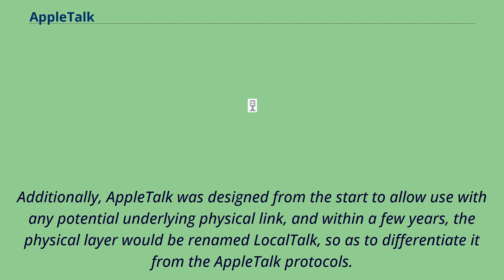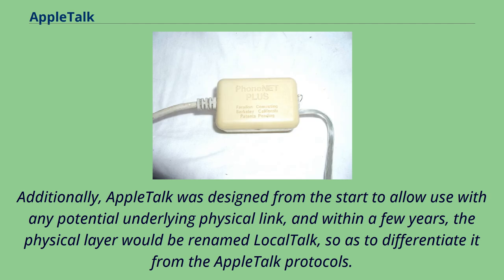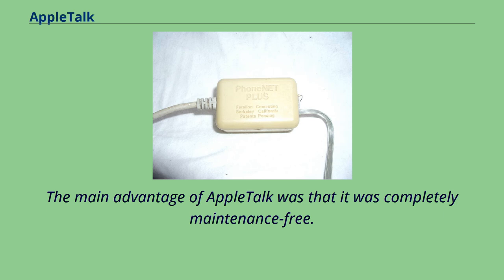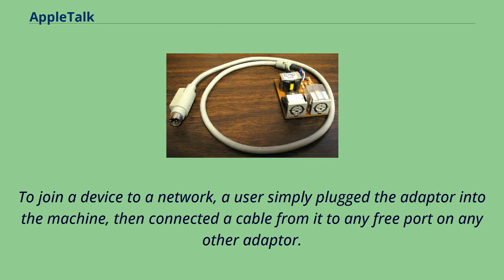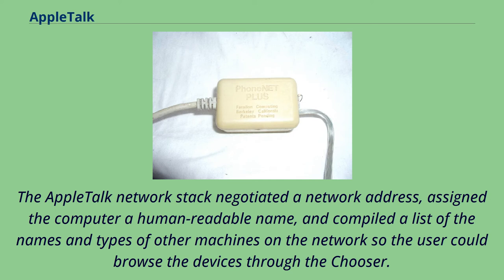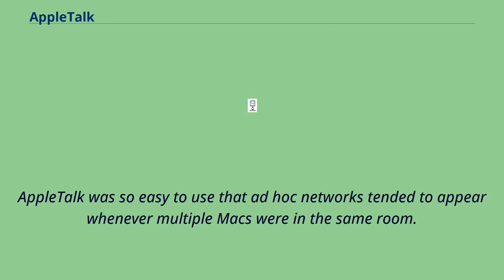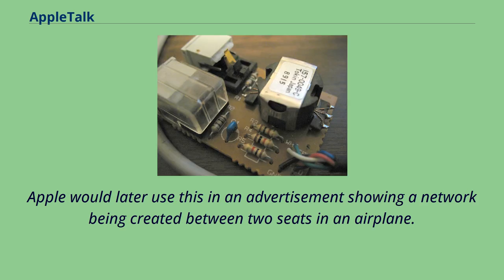The main advantage of AppleTalk was that it was completely maintenance-free. To join a device to a network, a user simply plugged the adapter into the machine, then connected a cable from it to any free port on any other adapter. The AppleTalk network stack negotiated a network address, assigned the computer a human-readable name, and compiled a list of names and types of other machines so the user could browse devices through the Chooser. AppleTalk was so easy to use that ad hoc networks tended to appear whenever multiple Macs were in the same room.